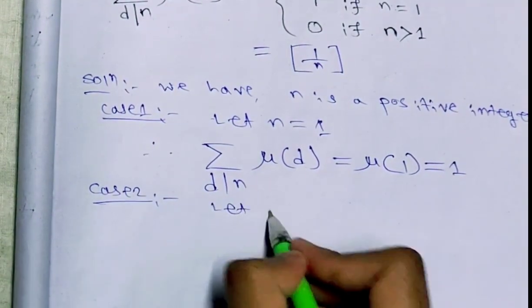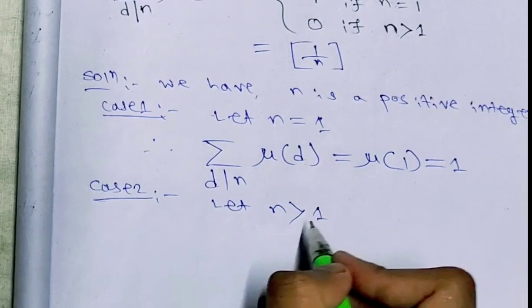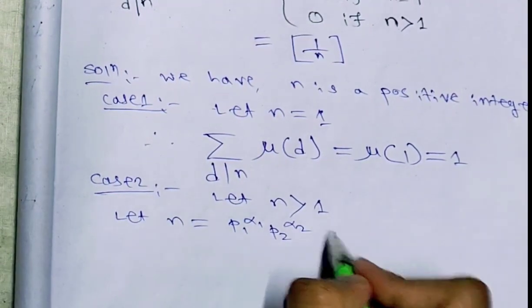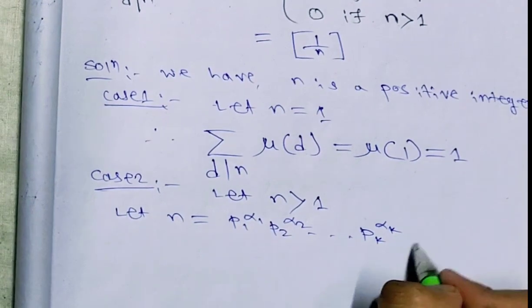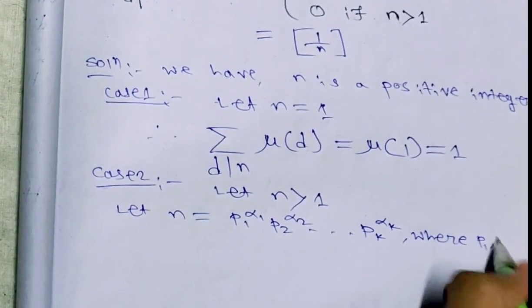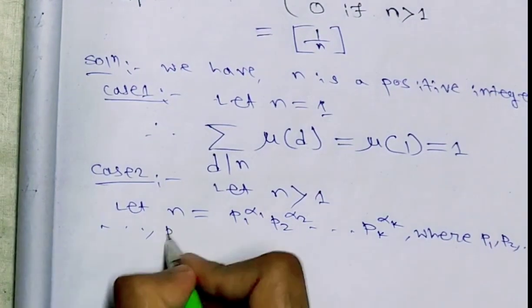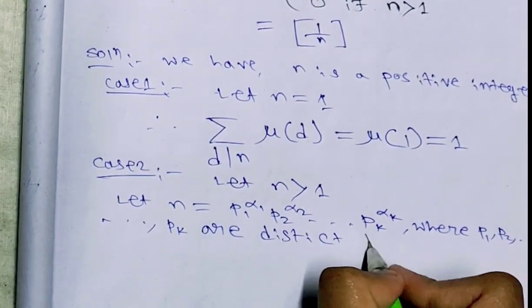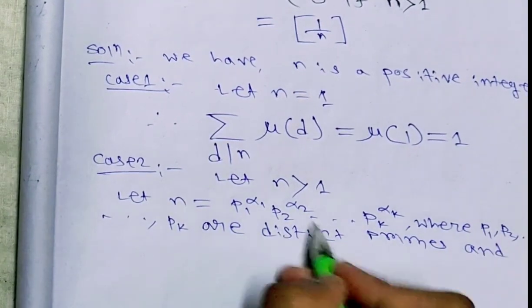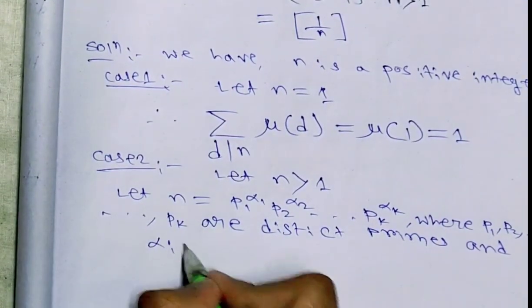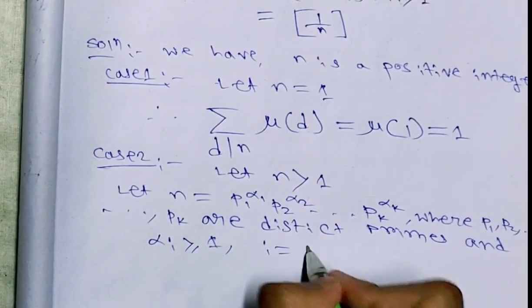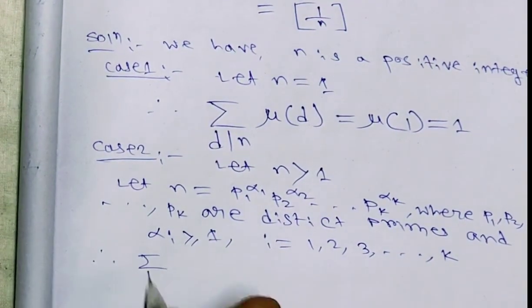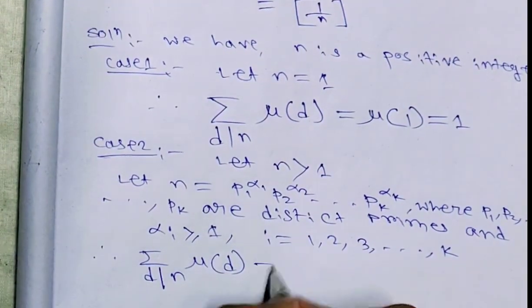Case 2: Let n be greater than 1. We write n = p1^α1 · p2^α2 · ... · pk^αk, where p1, p2, ..., pk are distinct primes, and αi ≥ 1 for i = 1, 2, 3, ..., k.